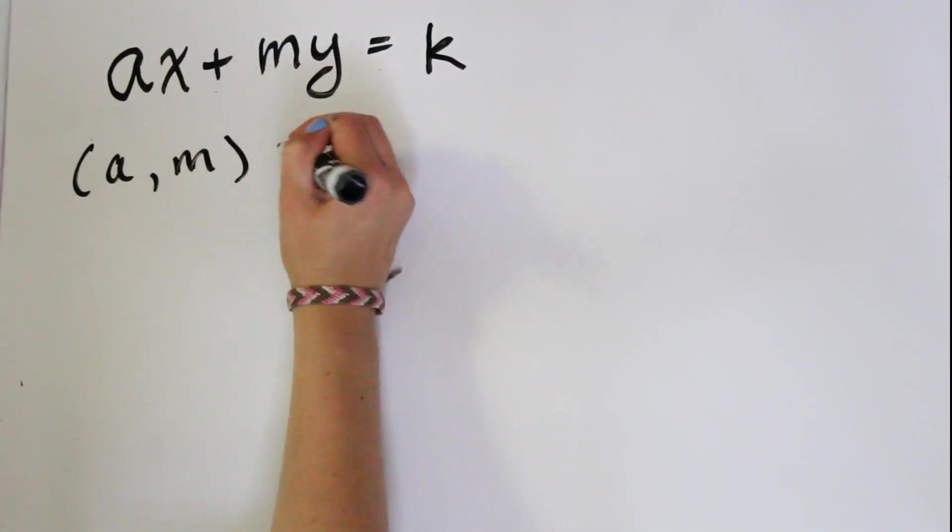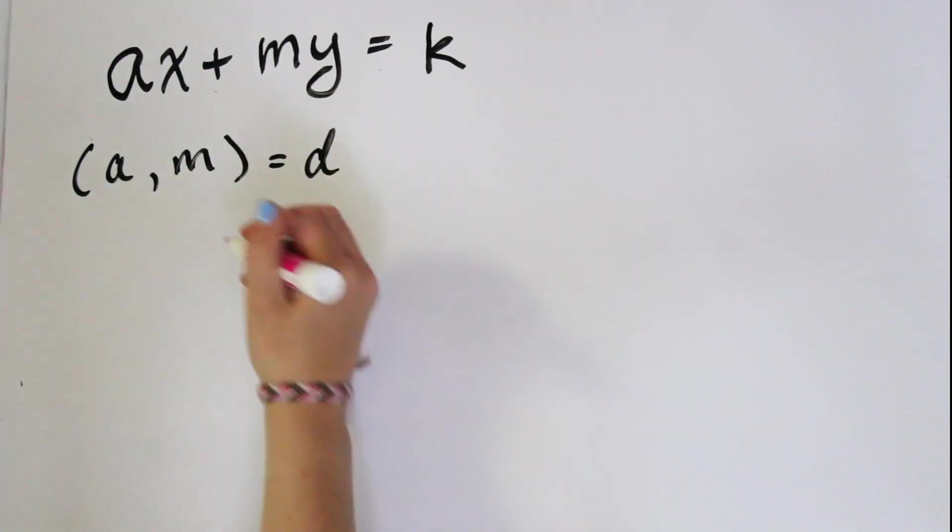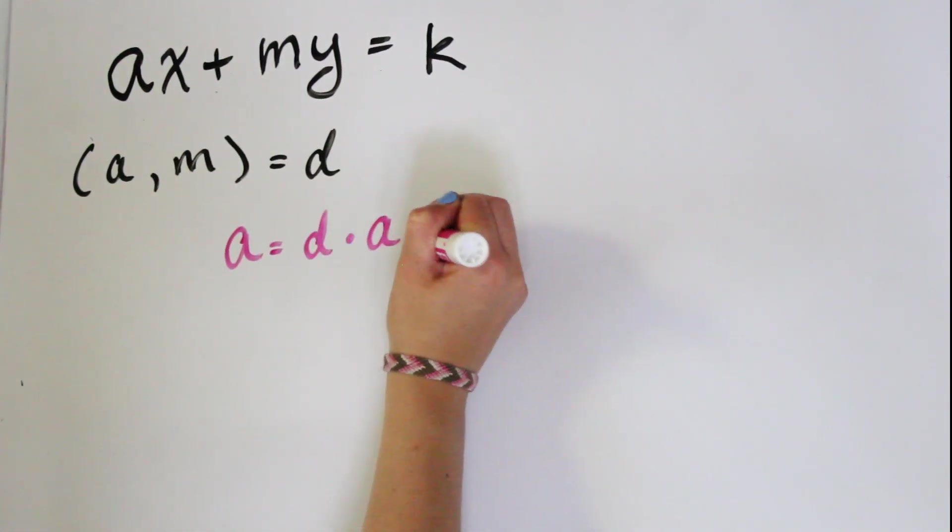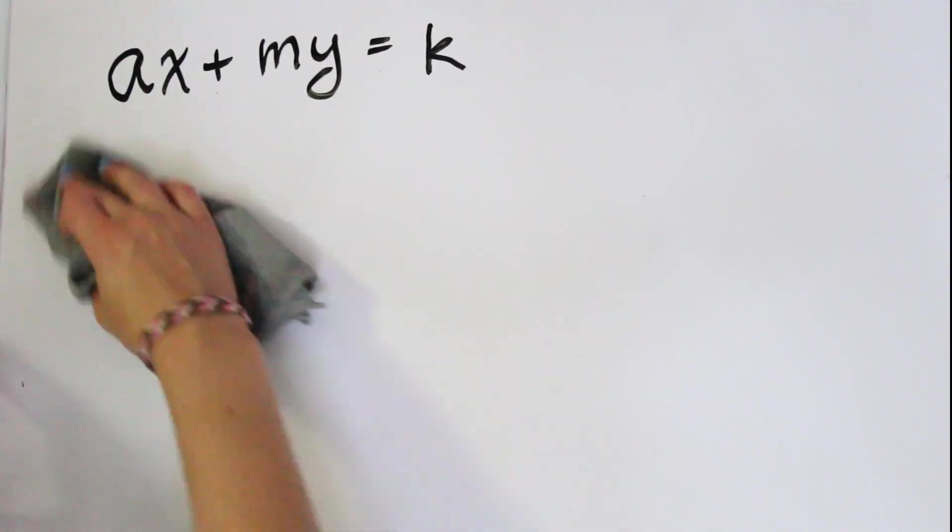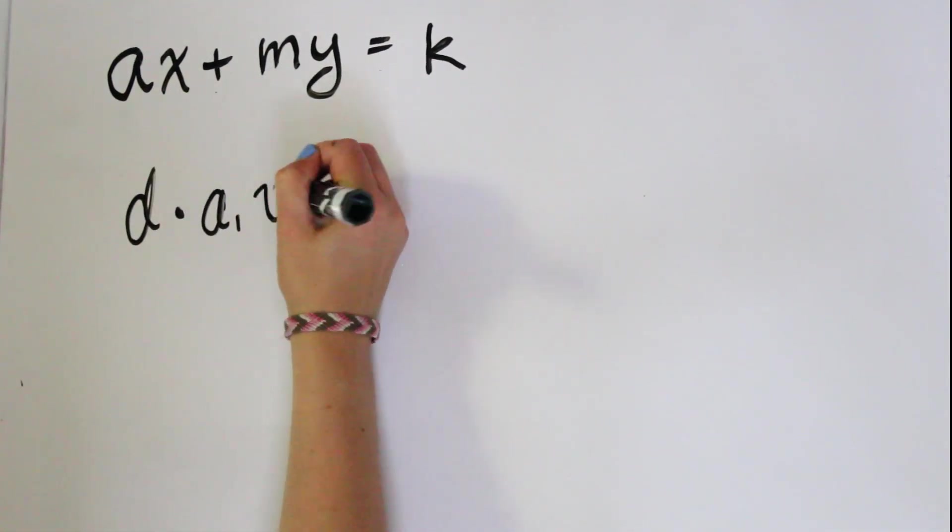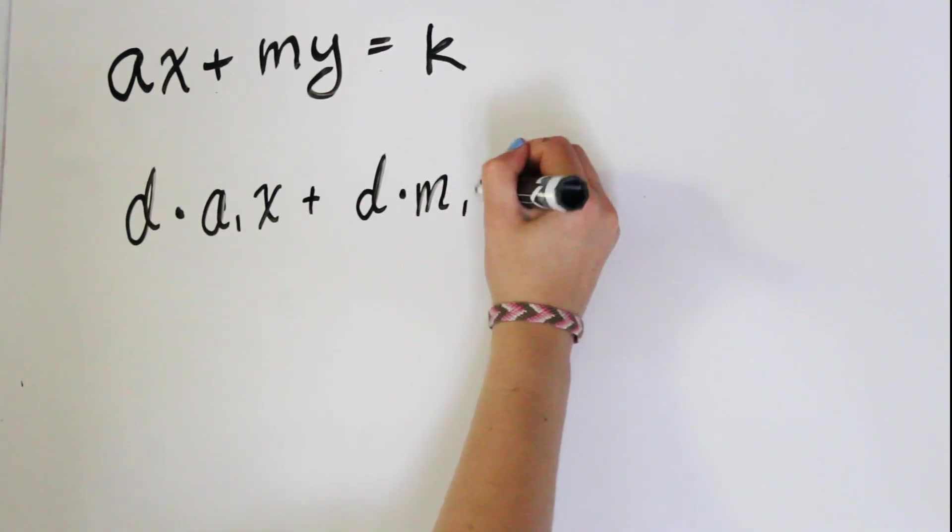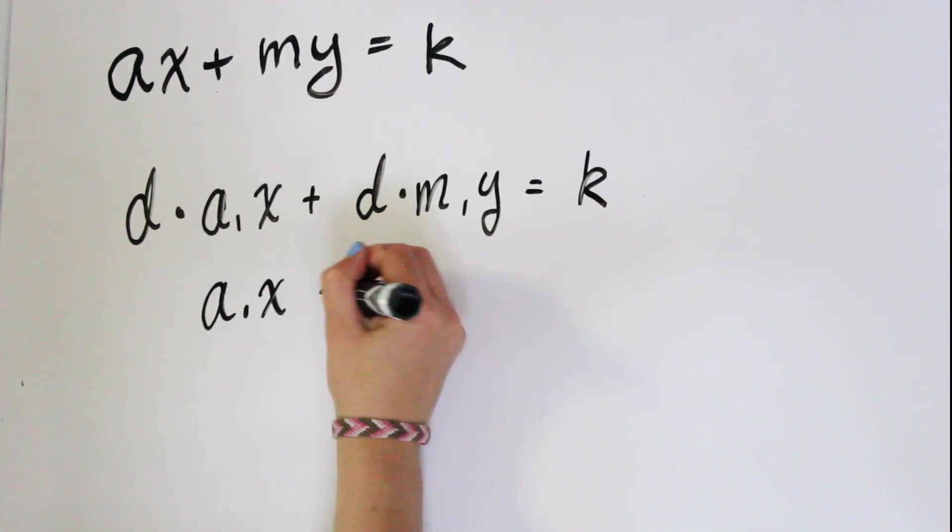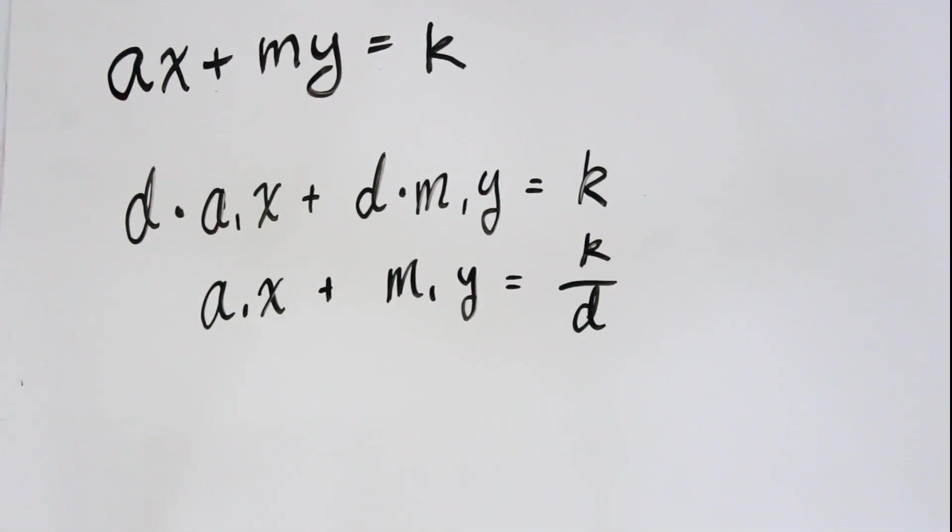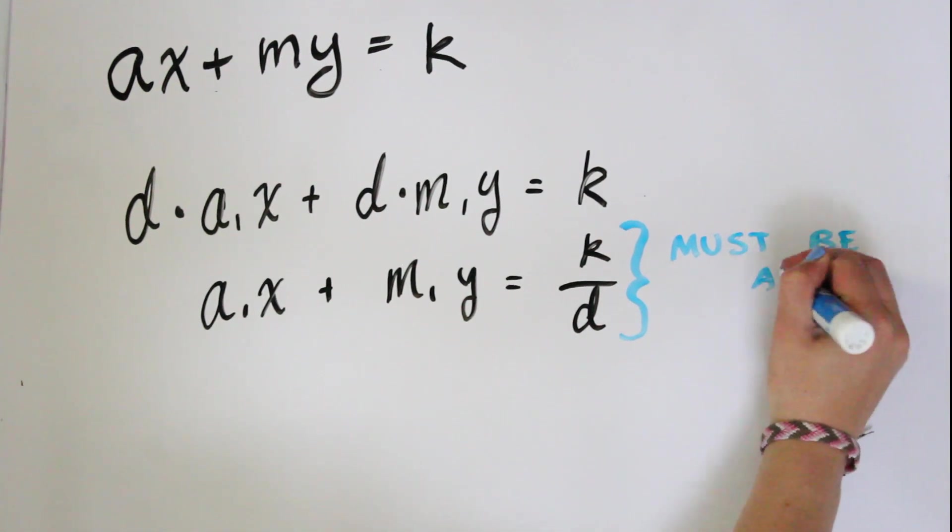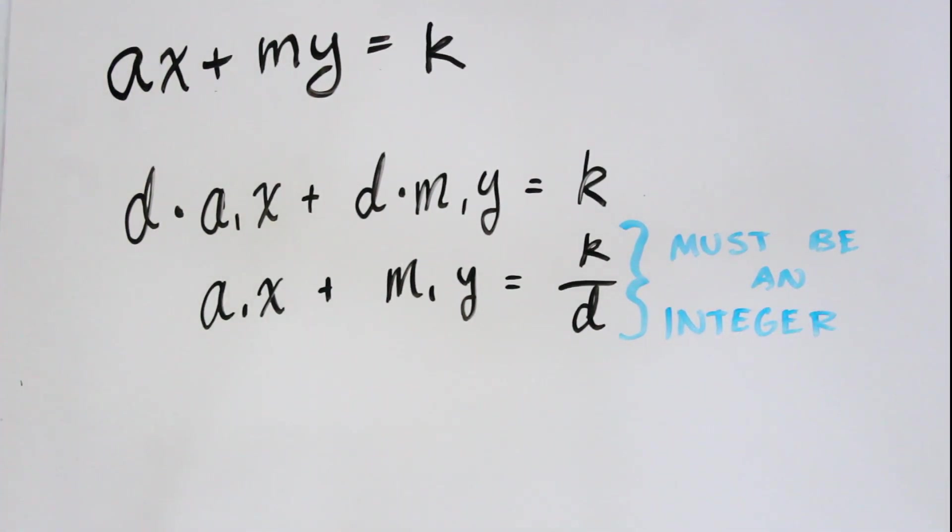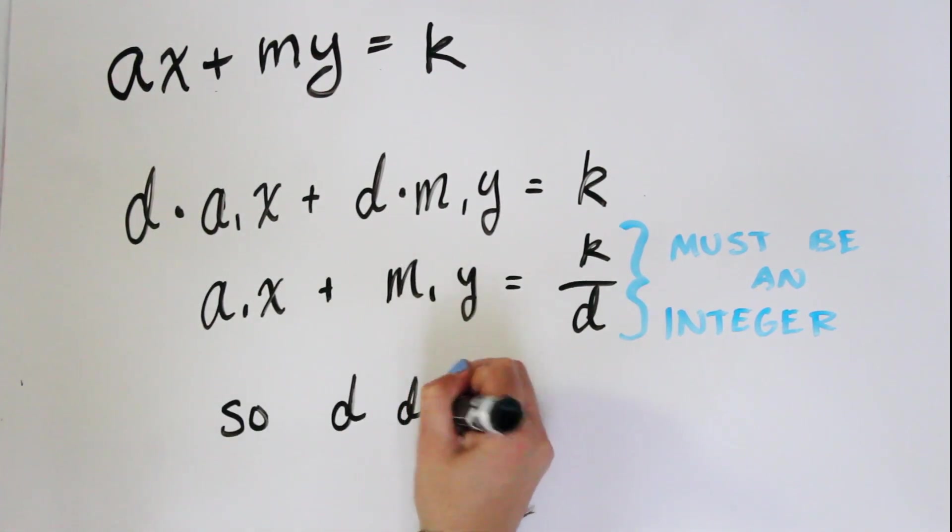Let's call the greatest common divisor of a and m d. We know that a = d × a₁ and m = d × m₁, a₁ and m₁ being some integer. So then we can rewrite this saying d × a₁ × x + d × m₁ × y = k. So then a₁ × x + m₁ × y = k/d. And this must be an integer. Because everything on the left hand side is assumed to be an integer as well. So therefore d divides k.